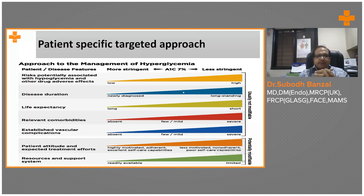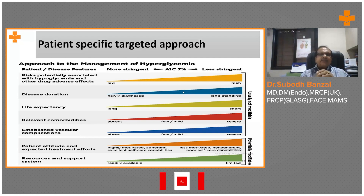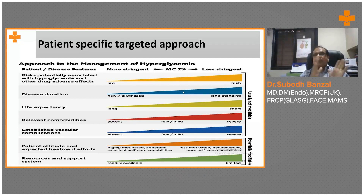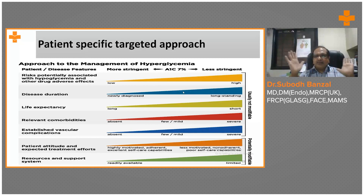All these factors — the duration of diabetes, life expectancy, comorbidities, their motivation, their resources, their finances, their support — it all helps. There is the duration of diabetes: if the patient is young, you control them well; and for older patients, you could relax.